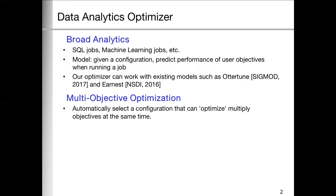There are manually-tuned and learning-based models, and our optimizer can work together with these existing models. The second one is our focus, the multi-objective optimization. It means to automatically select a configuration that can optimize multiple objectives at the same time.